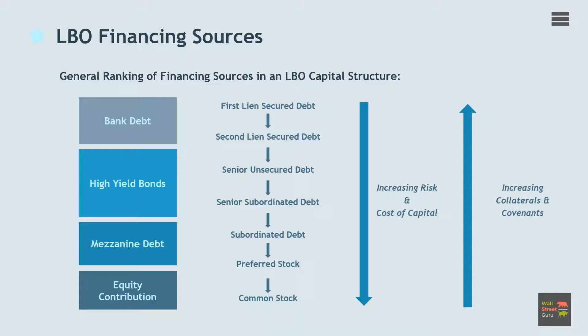For example, bank debt usually represents the least expensive form of LBO financing. At the same time, bank debt is secured by various forms of collateral and governed by maintenance covenants.